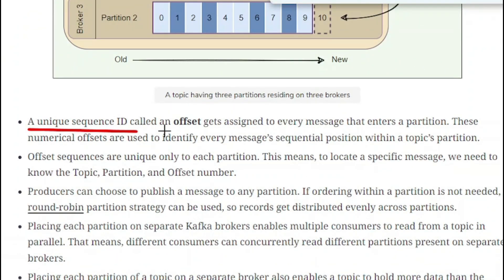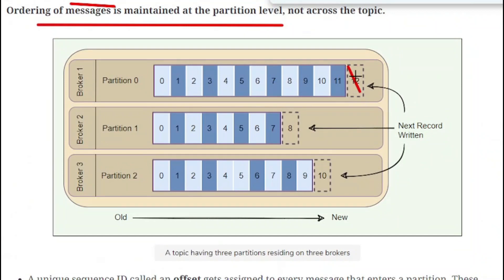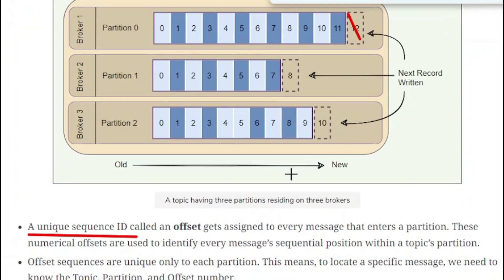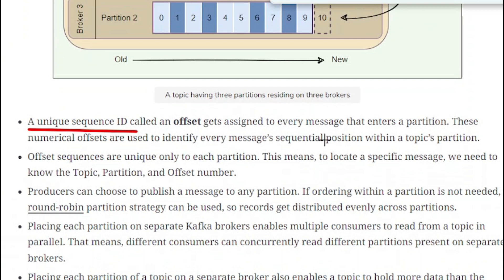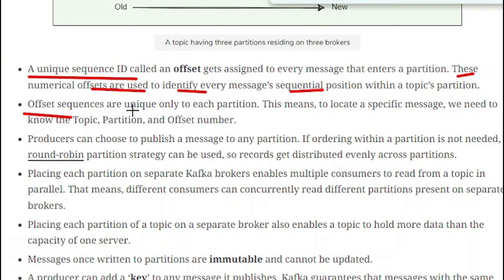A unique sequence ID called an offset gets assigned to every message that enters a partition. Each message is assigned a unique sequence ID which we call an offset in the context of Kafka. These numeric offsets are used to identify each message's sequential position within a topic partition. Offset sequences are unique only to each partition. To locate a specific message, you need to know the topic, partition, and offset number — all three are important.